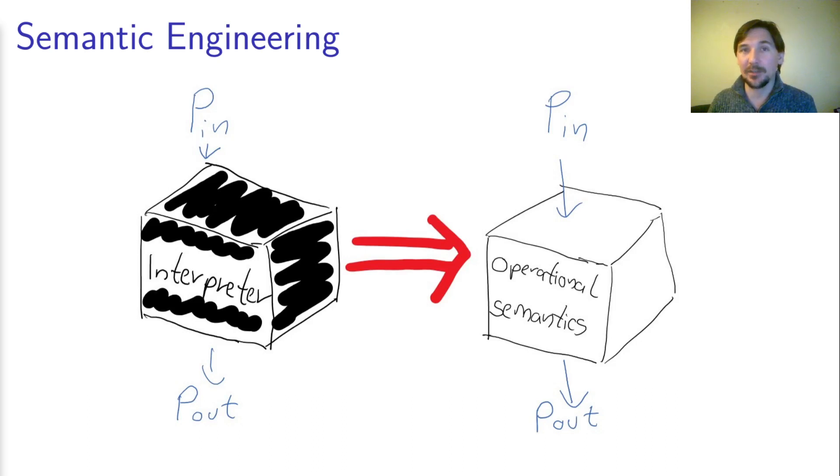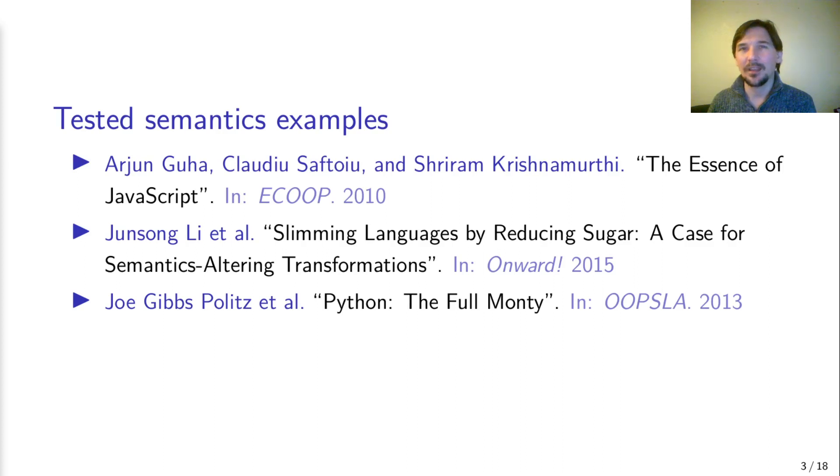The task represented by the red arrow is currently done by human semantic engineers. But this task is tedious. Accordingly, there are only a handful of programming languages with formal tested semantics, like JavaScript or Python cited here. These semantics are the products of months of work by research groups.